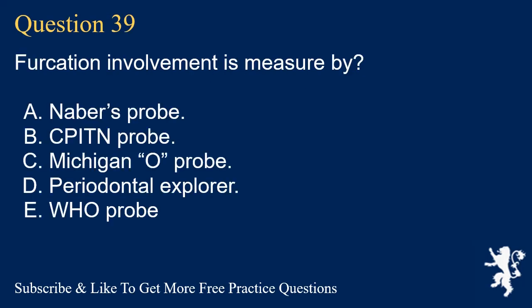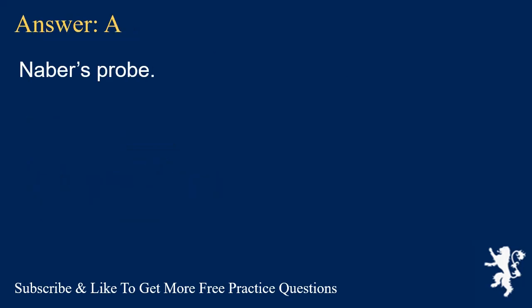Question 39. Furcation involvement is measured by? A. Nabers probe. B. CPN probe. C. Michigan O probe. D. Periodontal explorer. E. WHO probe. Answer: A. Nabers probe.